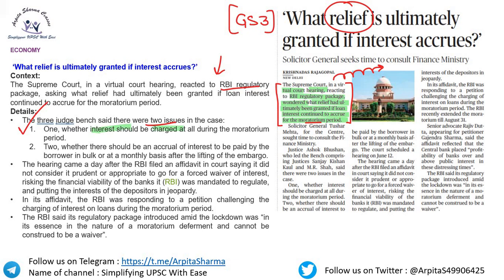A three-judge bench said there were two issues: one, whether interest should be charged at all during the moratorium period; and two, whether accrued interest should be paid by the borrower in bulk or monthly after lifting of the moratorium. The hearing came after RBI filed an affidavit saying it did not consider it prudent to go for a forced waiver of interest, as it would risk the financial viability of banks.